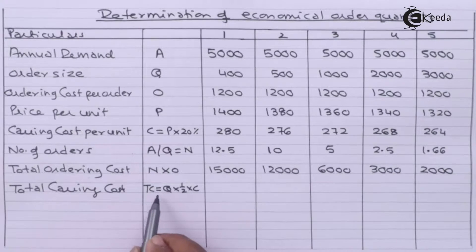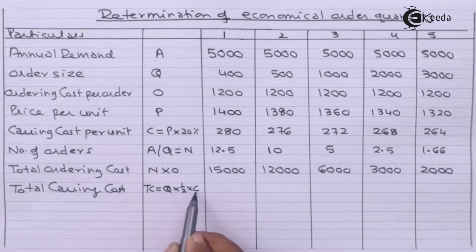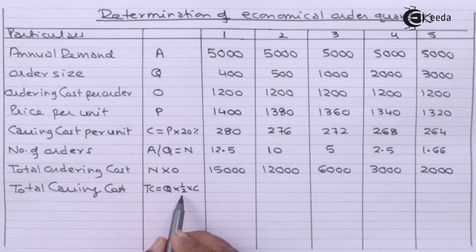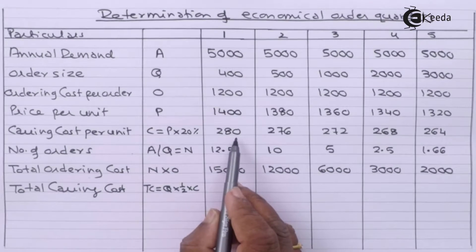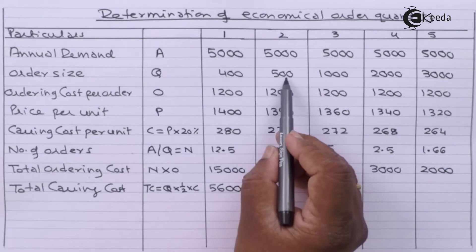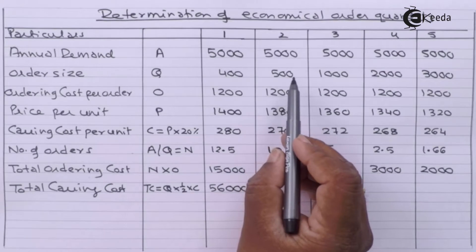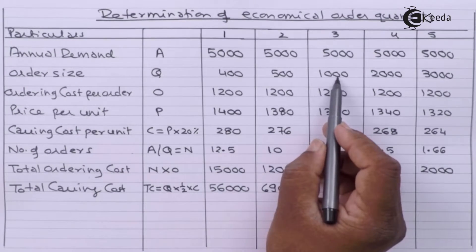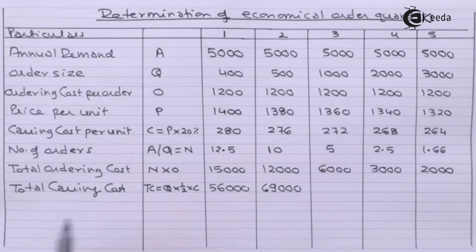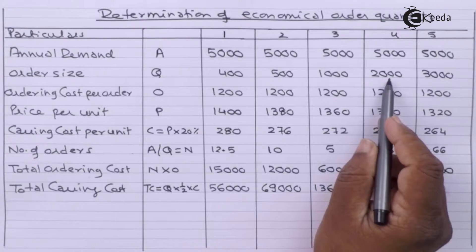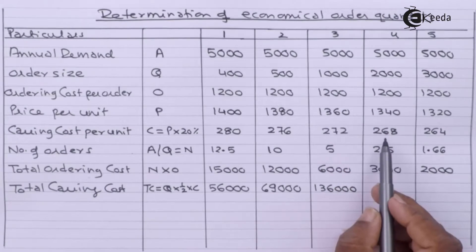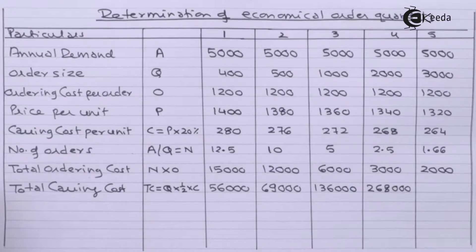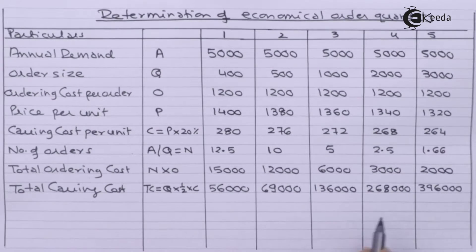Total carrying cost = Q × 1/2 × C. For 400 tons: 400 × 1/2 × 280 = 200 × 280. For 500 tons: 500 × 1/2 × 276. For 1000 tons: 1000 × 1/2 × 272. For 2000 tons: 2000 × 1/2 × 268. For 3000 tons: 3000 × 1/2 × 264.